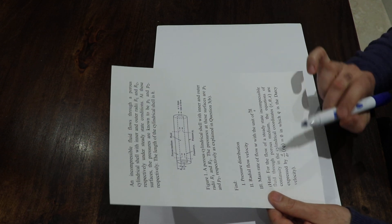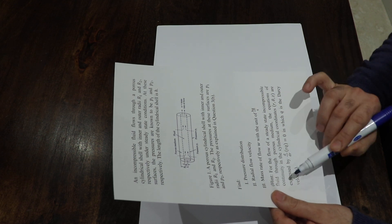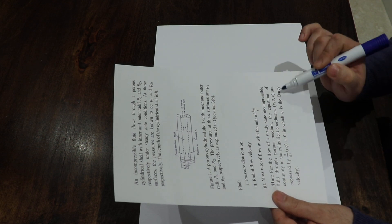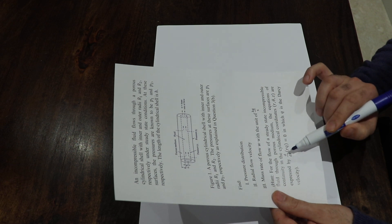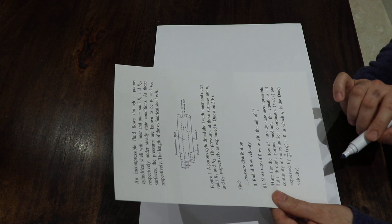There is a hint here: for the flow of a steady state incompressible fluid through porous medium, the equations of continuity in cylindrical coordinates are expressed by the derivative of RQ with respect to R equal to zero, in which Q is the Darcy velocity.